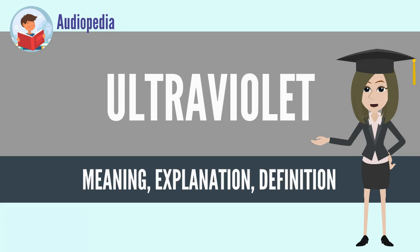UV radiation is present in sunlight, constituting about 10% of the total light output of the sun. It is also produced by electric arcs and specialized lights, such as mercury vapor lamps, tanning lamps, and black lights.